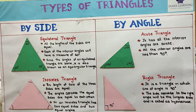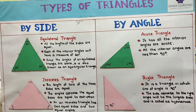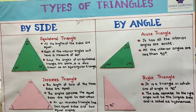We can classify triangles into two categories: we can classify them according to the sides and according to angles. According to the classification by side, we have equilateral triangle, isosceles triangle, and scalene triangle. And if we classify according to angle, we have acute triangle, right triangle, and obtuse triangle.